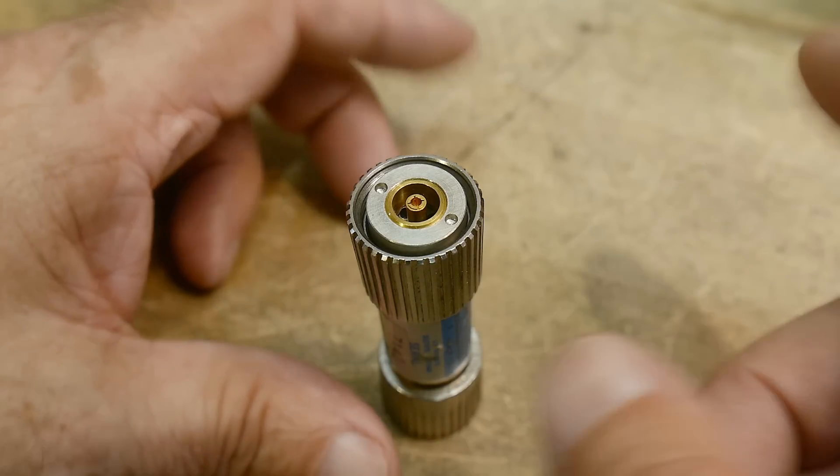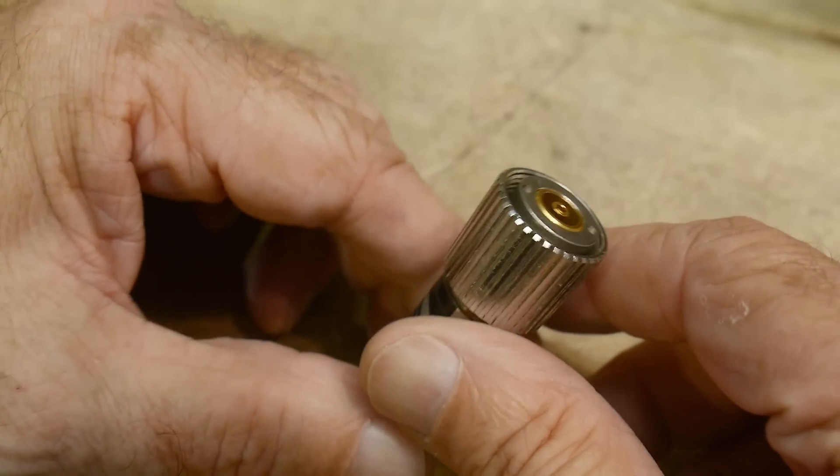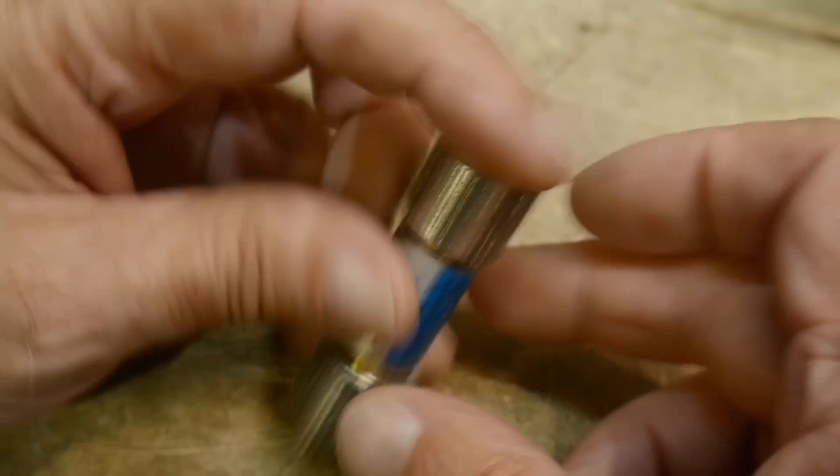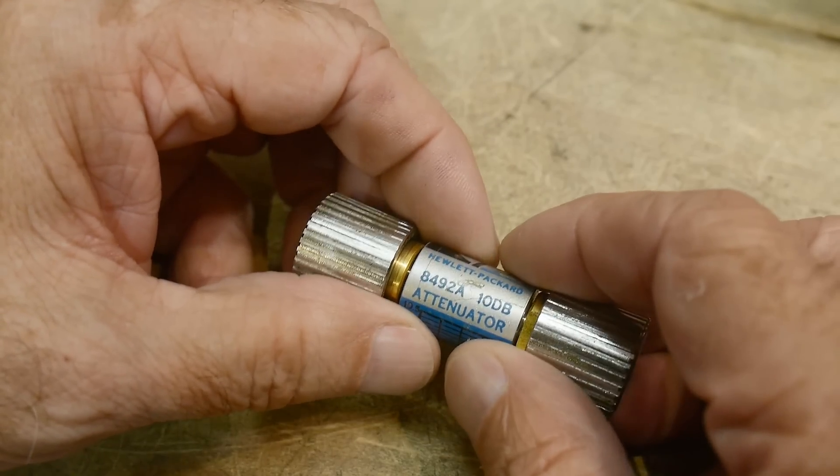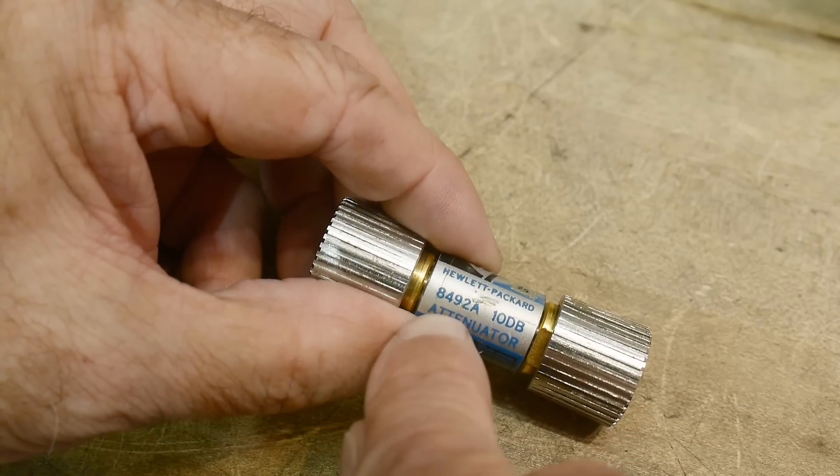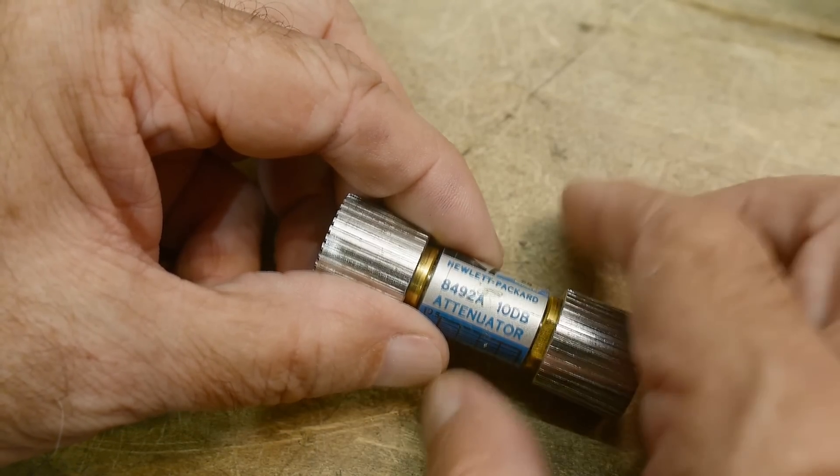All right, I wanted to show this RF connector that you may have never seen before. This is a Hewlett Packard attenuator, 10 dB attenuator, part number 8492A.